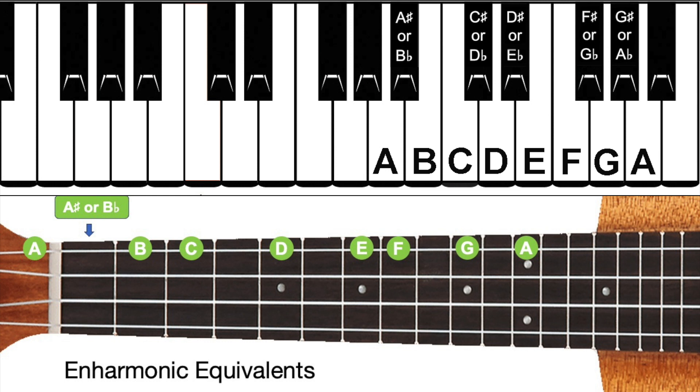The same applies to the other four black keys, or frets, that we didn't play. So the note between C and D would be C sharp, sharper than C, or D flat, flatter than D. The one between D and E would be D sharp, or E flat. The one between F and G would be F sharp, or G flat.